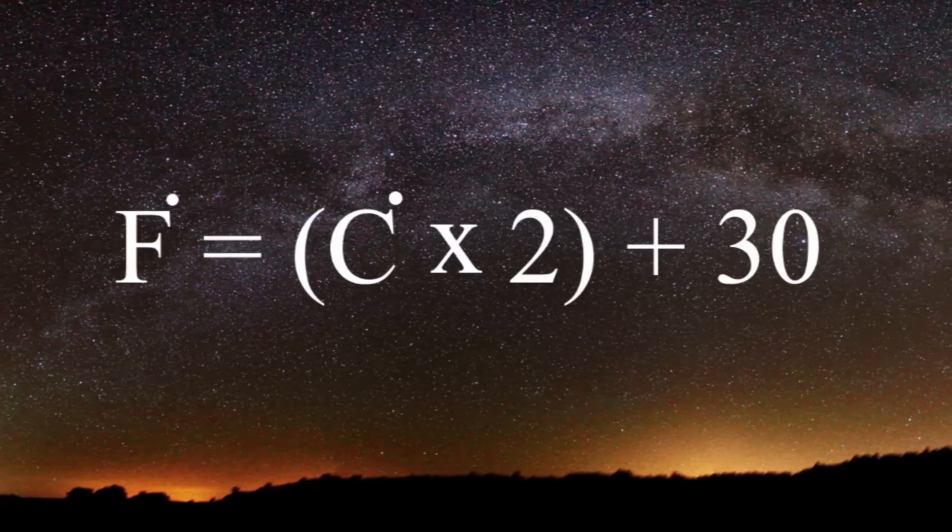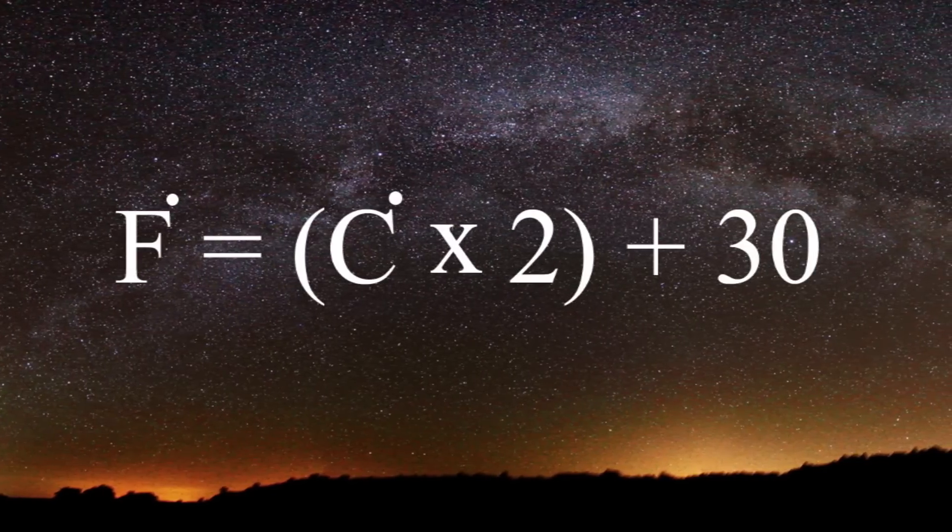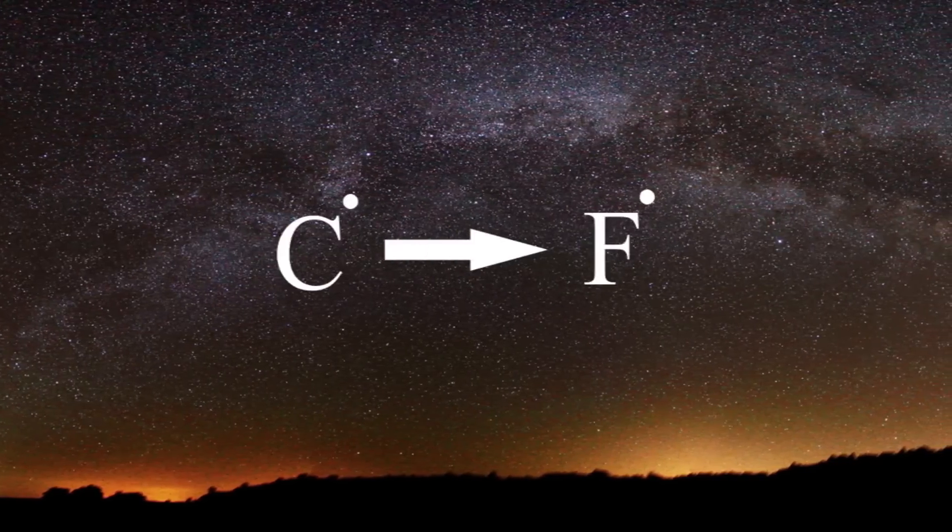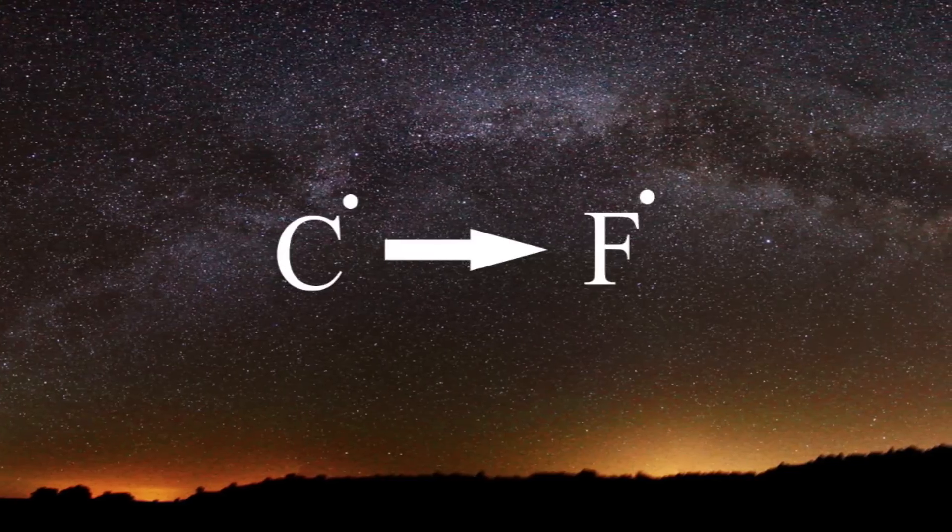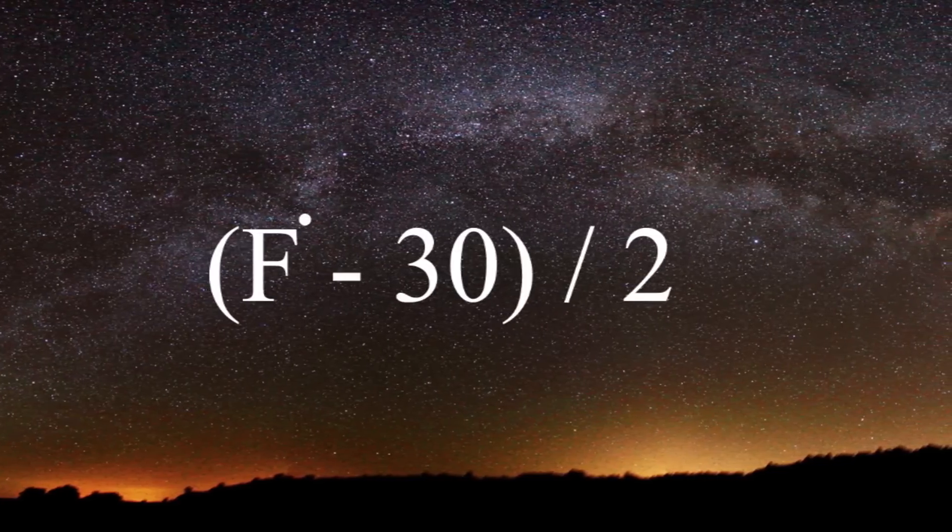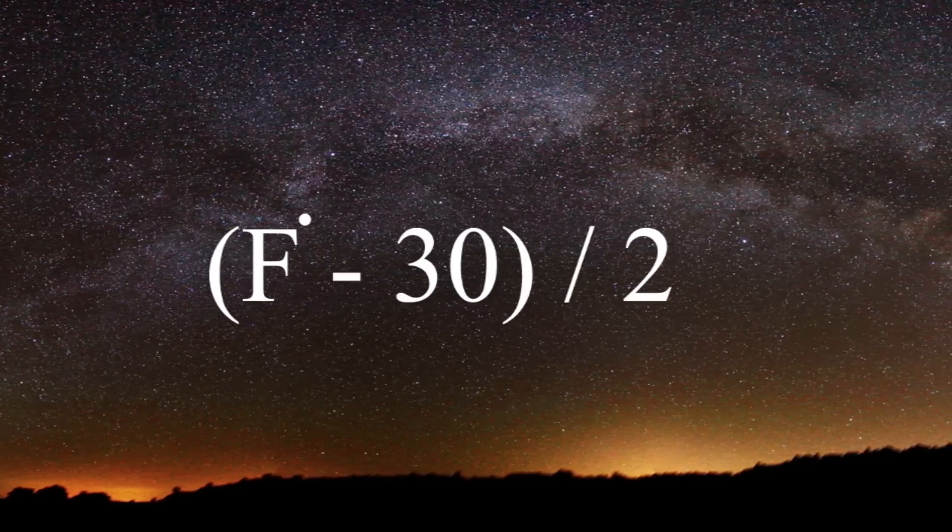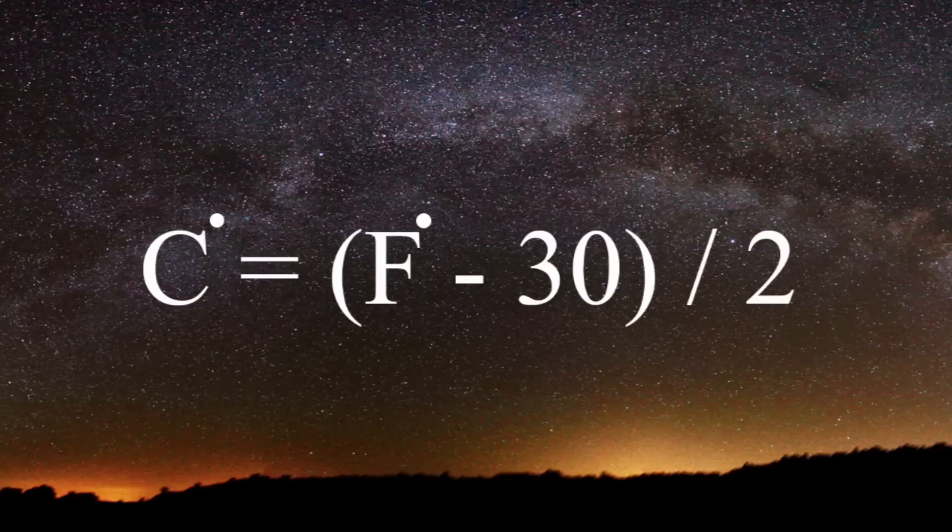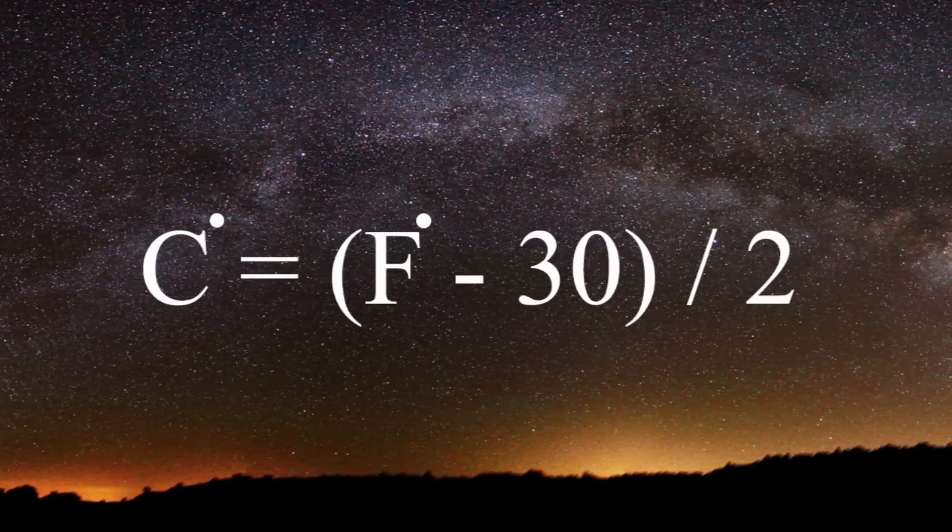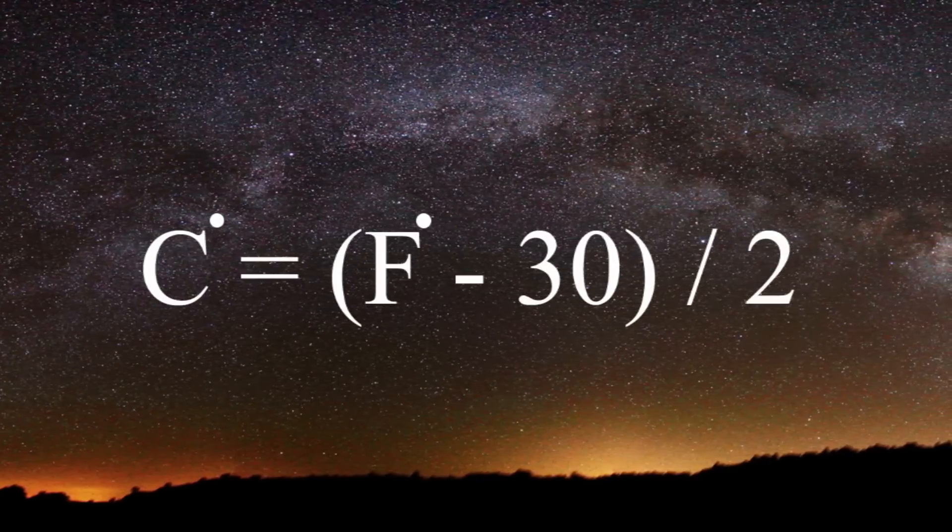The formula? Celsius temperature, multiply by 2, add 30. To convert Fahrenheit to Celsius, you'd do the opposite. Subtract 30 from the Fahrenheit temperature and then divide that number by 2. So Fahrenheit temperature minus 30 divided by 2. Converting the two isn't really that difficult.